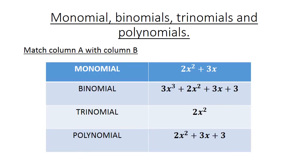Match column A with column B. A monomial matches with 2x squared. A binomial matches with 2x squared plus 3x. A trinomial matches with 2x squared plus 3x plus 3. And a polynomial is 3x cubed plus 2x squared plus 3x plus 3.